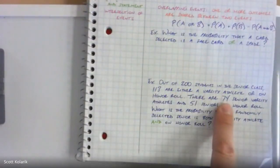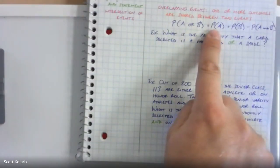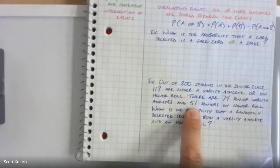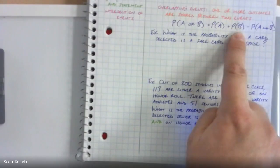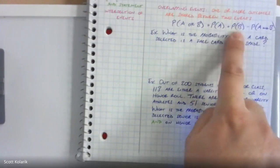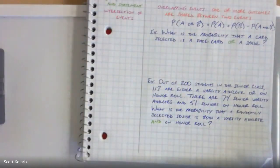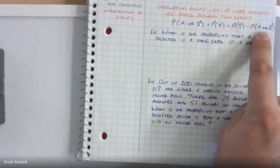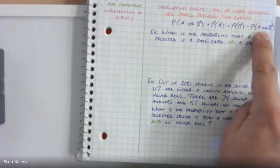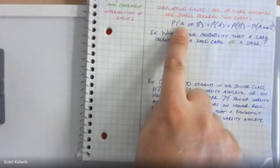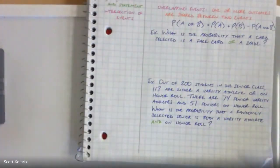The 200 students is the denominator representing the total sample space. The 113 represents P(A or B) = 113/200. Event A — varsity — gives 74/200, and Event B — honor roll — gives 51/200. Adding those: 74 + 51 = 125 over 200, which does not equal 113/200. The difference between 125 and 113 is 12, representing the overlap — 12 students are both varsity athletes and on the honor roll. The full solution is on the solution sheet uploaded to Google Classroom.